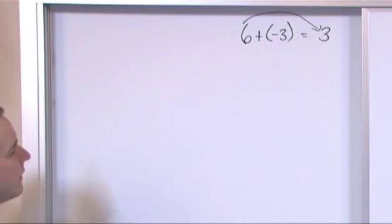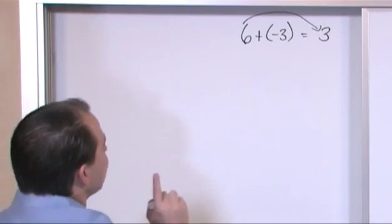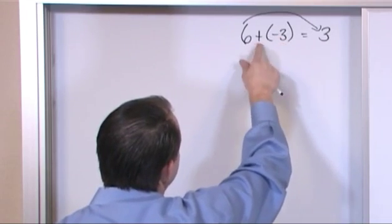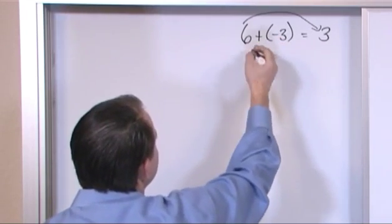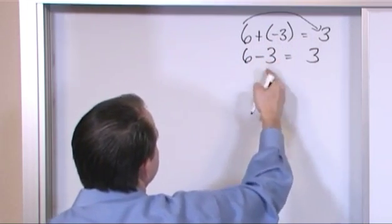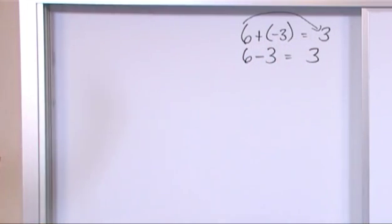And I also taught you there toward the end of the section that anytime you have something plus a negative something else, this plus negative business here, it's exactly the same thing as just putting a minus sign in there. And then you already know that six minus three also gives you three. So they're both very consistent.